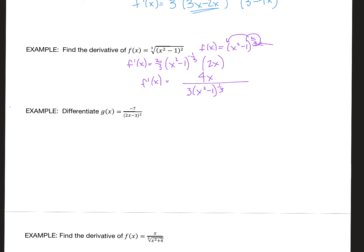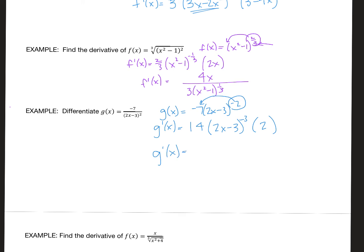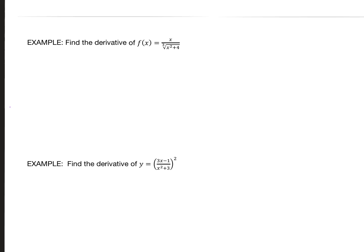For the next example, to avoid the quotient rule I'll rewrite this as negative 7 times (2x - 3) to the negative 2. Taking the derivative: multiply by what's out in front to get 14, the parentheses stay the same, decrease the exponent by one, then take the derivative of the inside. Cleaning up: 28 on top and (2x - 3) to the third on the bottom.